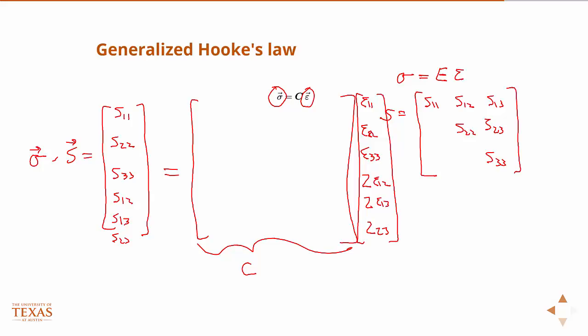Just like in one dimension, this is my constitutive model, I need one parameter to characterize it. If I have a fully anisotropic material, at least according to this equation, knowing nothing else, that means I have 36 material properties, 36 things that populate that C matrix.